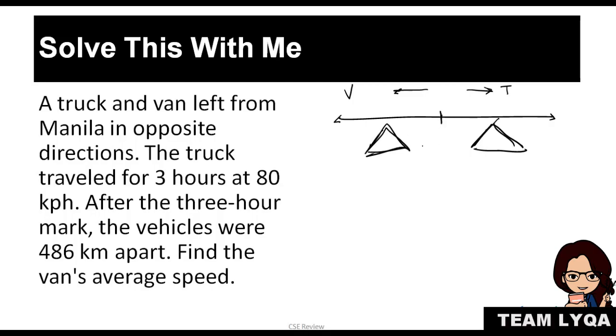If this is our drawing, you have two separate distances. Two separate SDT triangles. For the van, the speed wasn't given, that's what we're looking for. So that's X. In the case of our truck, the speed was given, which is 80 kph. Then after the 3-hour mark, the vehicles were 486 kilometers apart. That means their time is 3 hours. So you have 3 here, you have 3 here. Now we're looking for distance again. This distance will come out there.